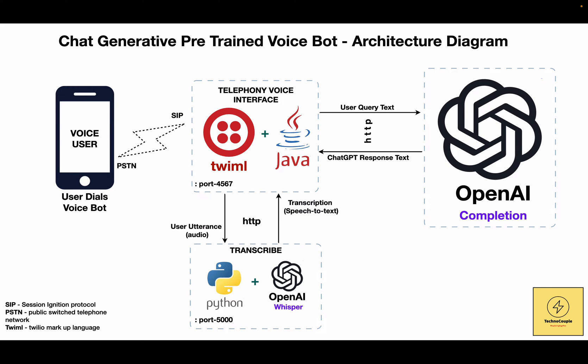Now, if you look here, we have a telephony voice interface module. This module comprises an integration between the Twilio platform and a Java application. This Java application needs to be internet-facing. You can do this by using ngrok. ngrok is a utility which exposes your local application to the internet. It's very easy to use — it provides you with a URL which you can use from anywhere to access your local applications. You can visit ngrok.com for documentation and for downloading ngrok.